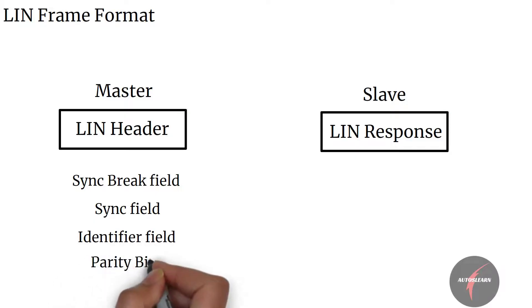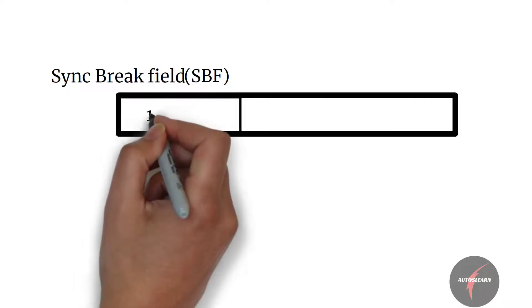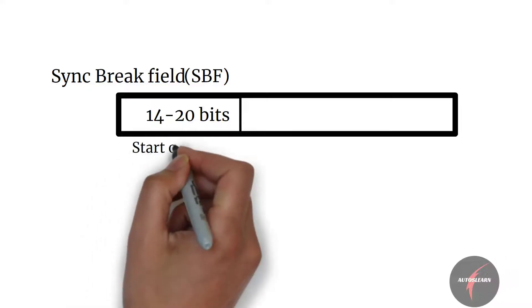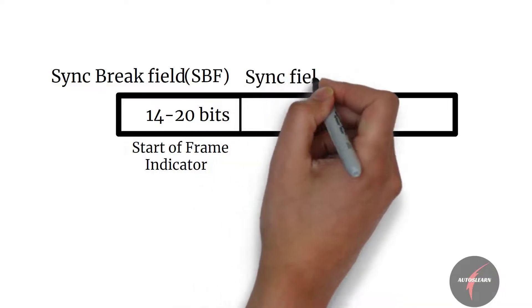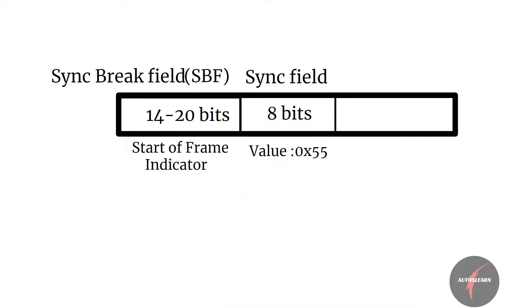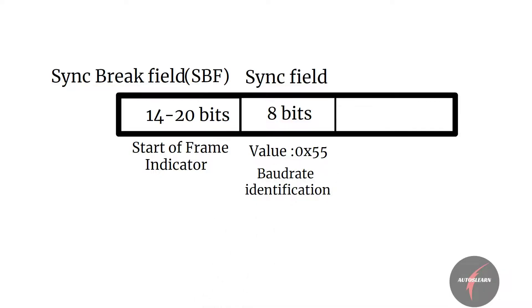The SYNC break field, also called SBF, is 14 or more bits long, most often 20 bits. This field acts as a start-of-frame indicator to all LIN nodes on the bus. The SYNC field is 8 bits long with a predefined value of 0x55, so that the LIN slave nodes can determine the baud rate used by the master node from the rising and falling edges of this field.